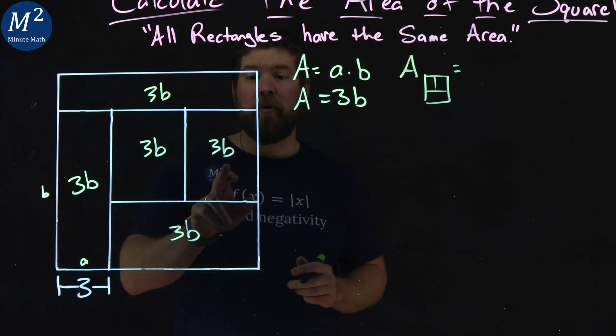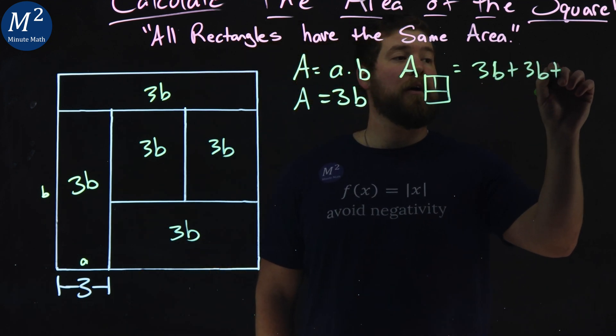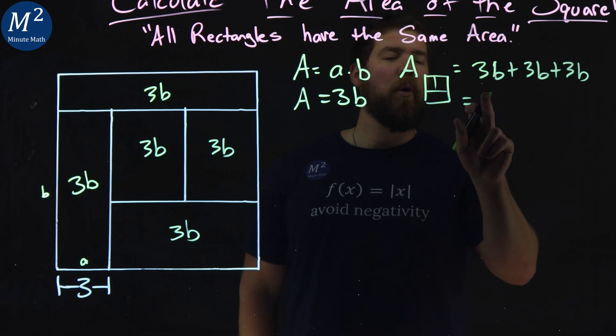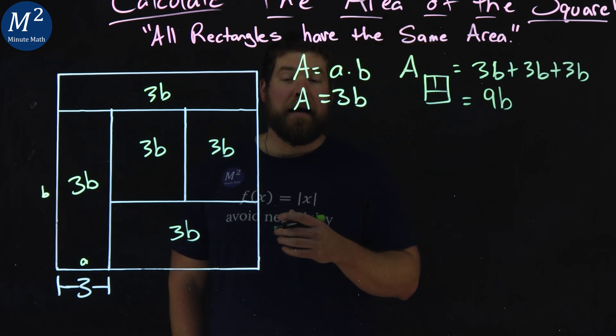Well, that's equal to 3b plus 3b plus 3b. So 3b plus 3b plus 3b. Or it's equal to 9b, right? It's equal to 9b.